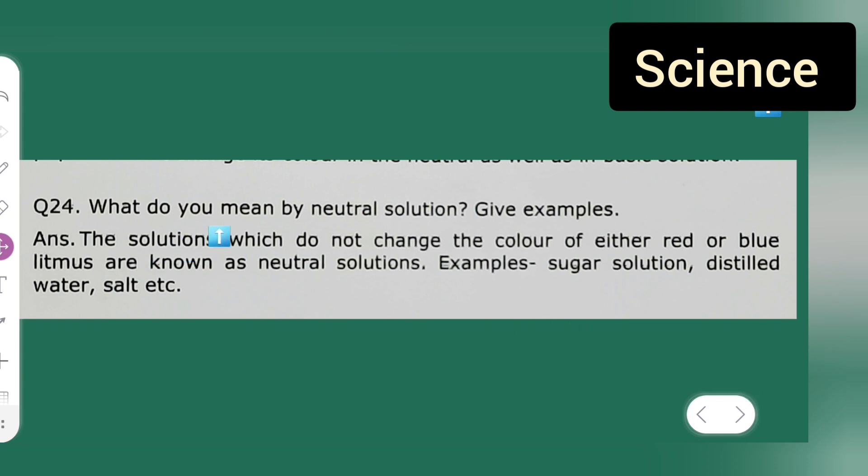What do you mean by neutral solution? Give examples. Answer: The solutions which do not change the color of either red or blue litmus are known as neutral solutions.